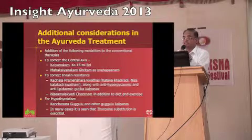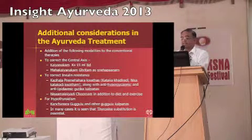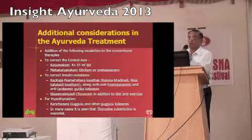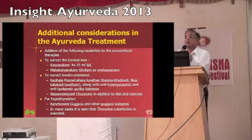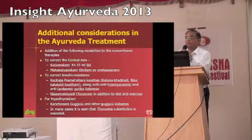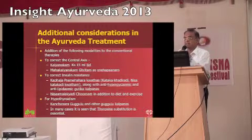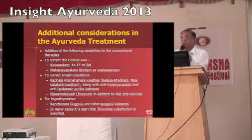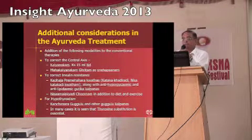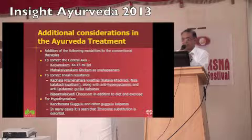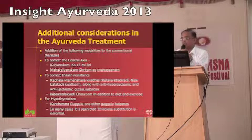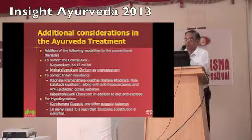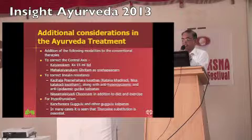Third, if patients have hypothyroidism, unless we address it they will not respond. Kanchnaara Guggulu and several other Guggulu Kalpanas provide supportive therapy in that case. From my experience, only patients who need about 25 micrograms of thyroxine are able to respond with our medicine alone. Most other cases needing 50 micrograms or more of thyroxine require thyroxine substitution to achieve normalization.